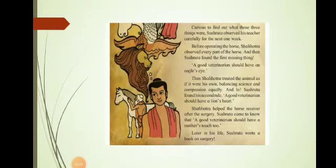In the last video, we saw that Sushruta was a student of veterinary medicine - medicine connected with the care and health of animals. His teacher's name was Shalihotra. Shalihotra asked Sushruta what things are needed to perform a surgery, which is a medical treatment that involves cutting open the body or part of the body to remove or correct something. Sushruta listed all the instruments and medicines needed, but Shalihotra said three things were missing and gave him one week - seven days - to find them.